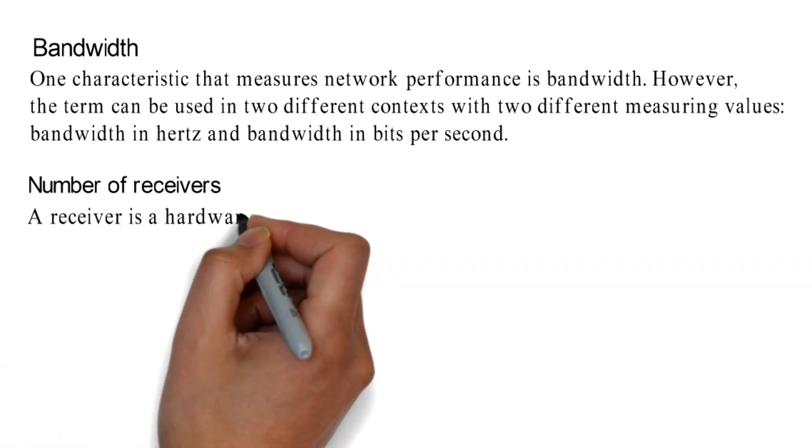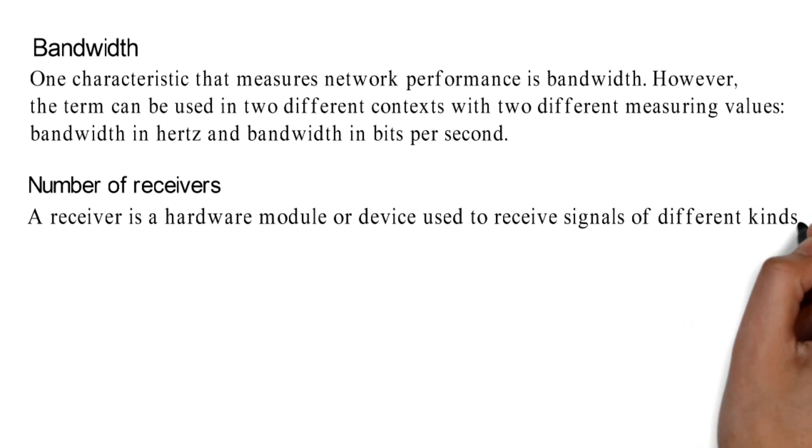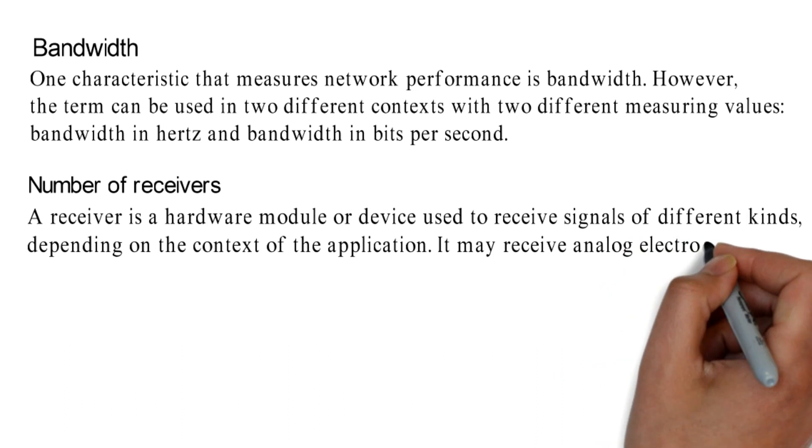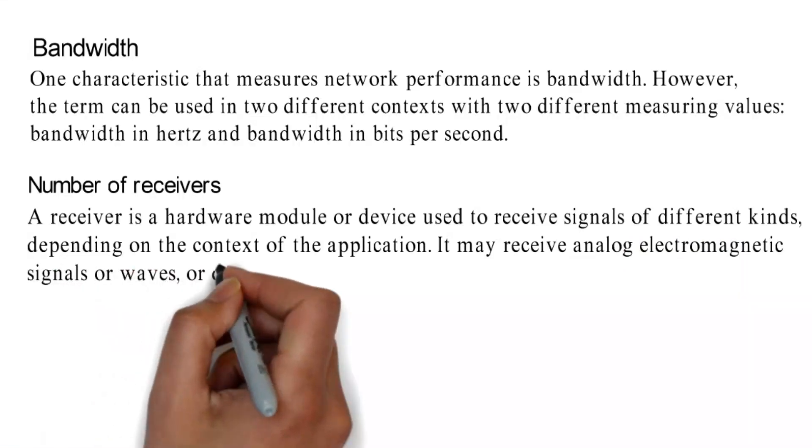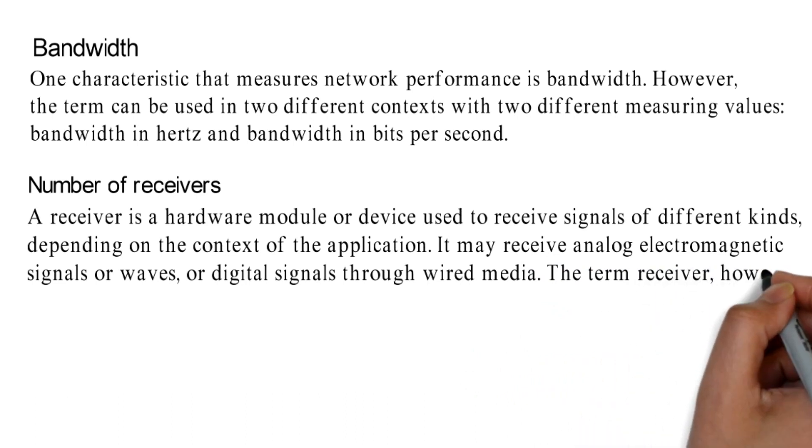Number of receivers. A receiver is a hardware module or device used to receive signals of different kinds, depending on the context of the application. It may receive analog electromagnetic signals or waves, or digital signals through wired media.